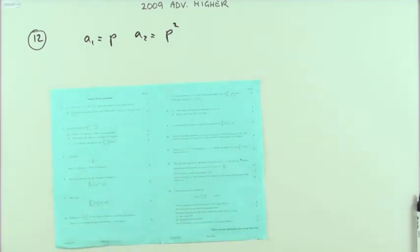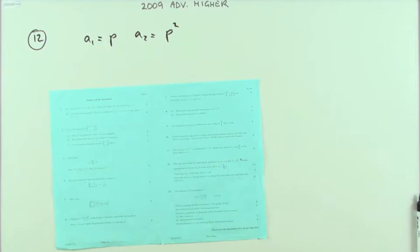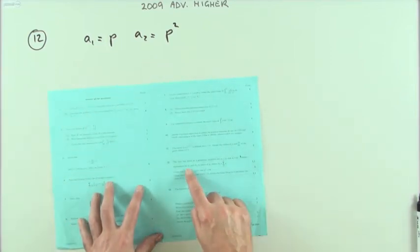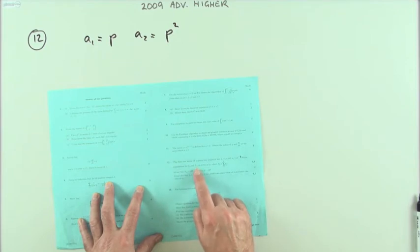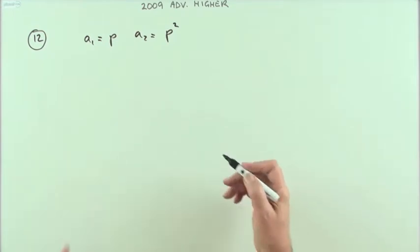Number 12 from the 2009 Advanced Higher. The first two terms of a geometric sequence are given. Obtain expressions for the sum of the first n terms and the sum of the first 2n terms in terms of p.